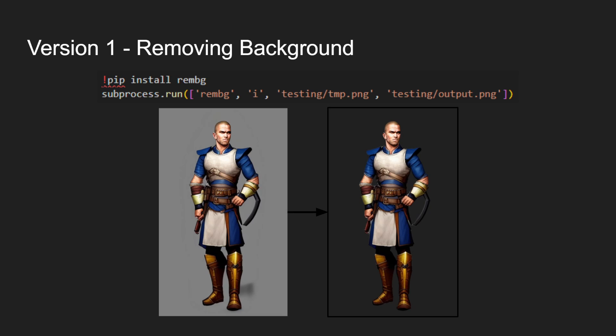To remove the background, there's a Python library called rembg — for remove background. It apparently works in Python; I didn't get it to work directly, so I just called it through the command line, which was another option. You can see the example of how it works. I'm fairly happy with the results, both with the image and with removing the background — it came out fairly clean most of the time.